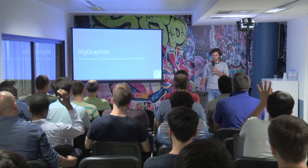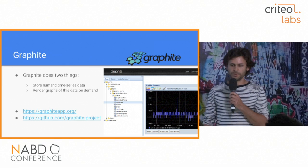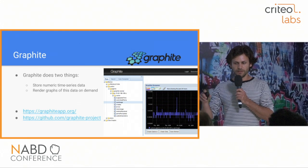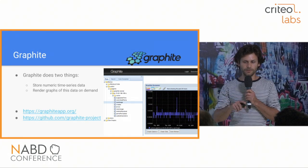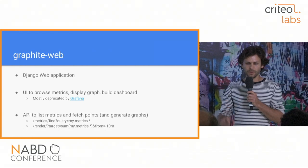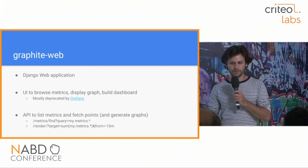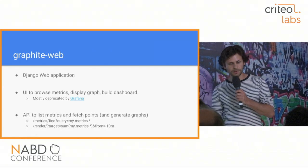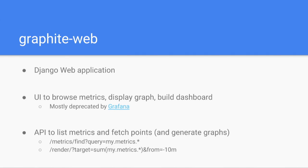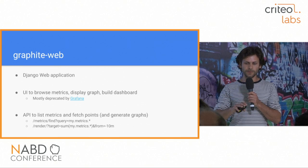Graphite does two things: it stores numeric time series data — metric name, timestamp, and value — and then you can get this data back in graphs or JSON. The main component is Graphite Web, a web application for graphs and dashboards. The UI is mostly deprecated by Grafana, but the API is very important: it lets you list metrics and evaluate expressions. For example, listing all metrics matching 'my.metrics.*' or summing metrics over a 10-minute period.